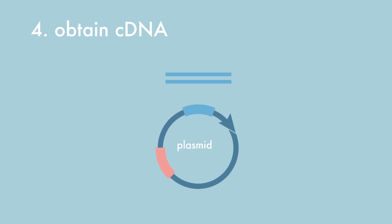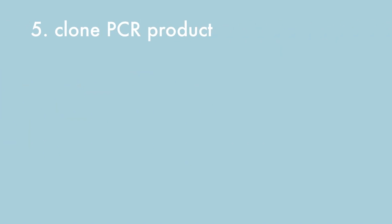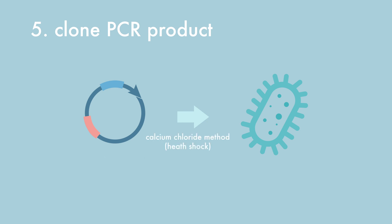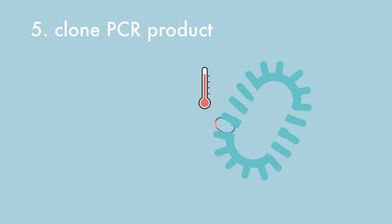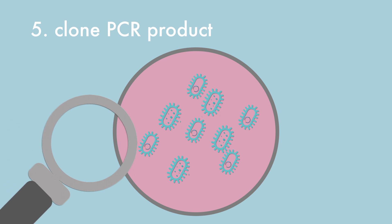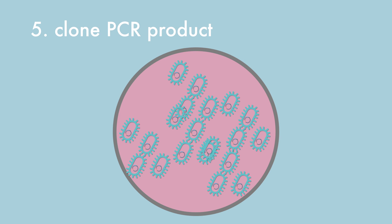The obtained DNA is inserted into a plasmid containing an antibiotic resistance gene. The next step is to clone the PCR product into an expression vector. The plasmid is introduced into E. coli by a process called transformation, most commonly using the calcium chloride method, also known as a heat shock. Channels in the membrane open through which the plasmid can enter the cell. The bacteria are then plated onto an agar plate with an antibiotic. Only bacteria that have taken up the plasmid with the antibiotic resistance gene will survive. These bacteria multiply and produce the needed DNA plasmids rapidly, yielding numerous plasmid copies.